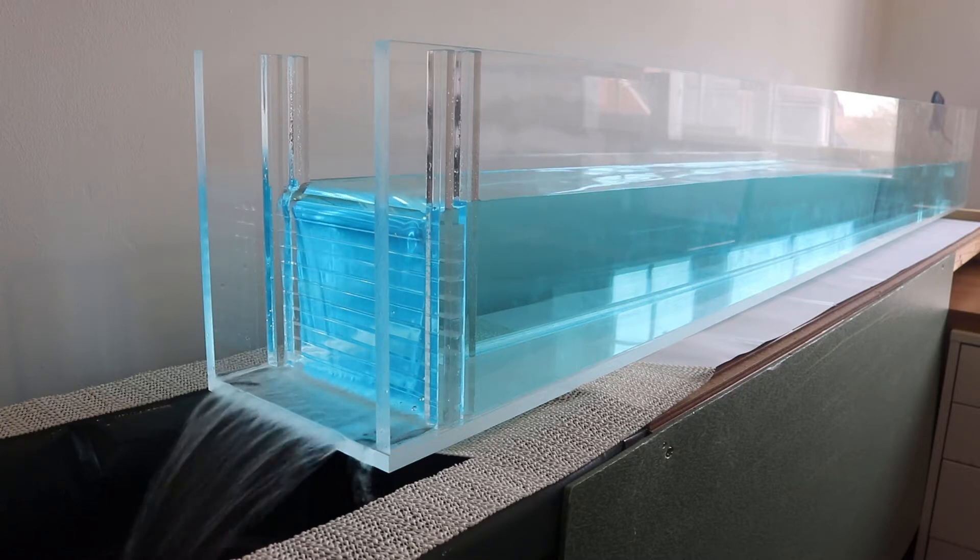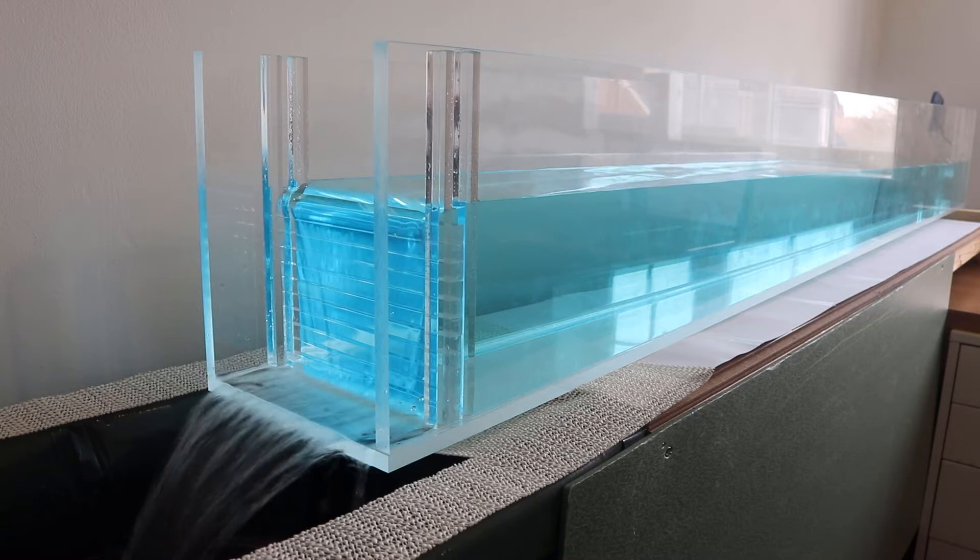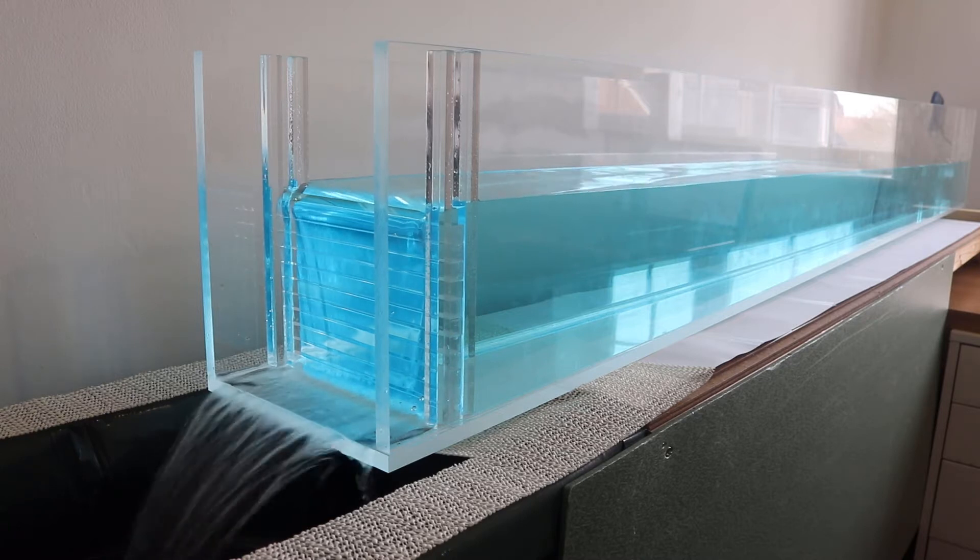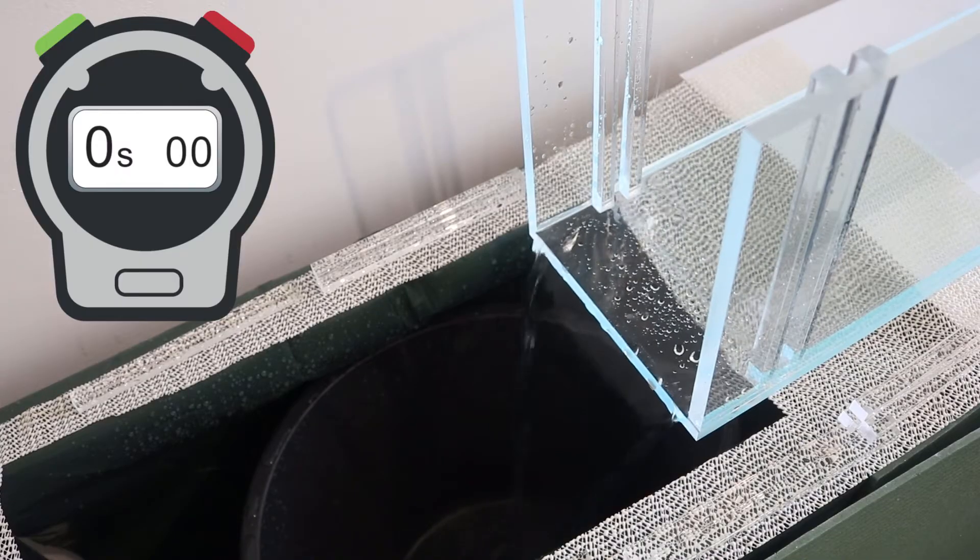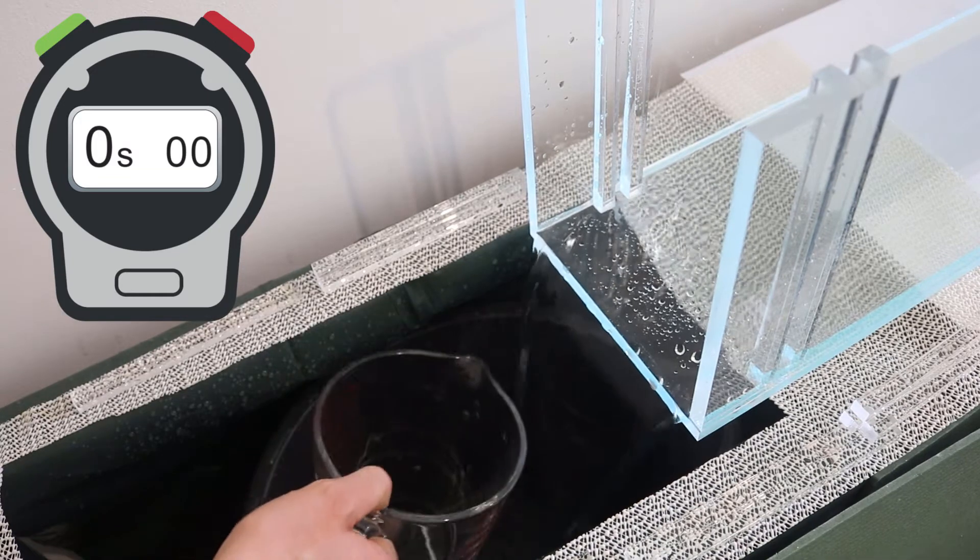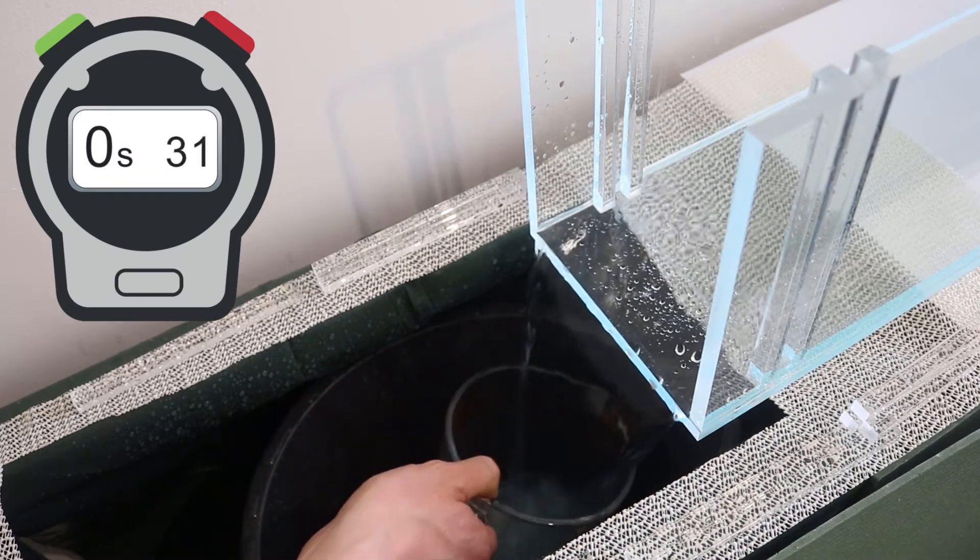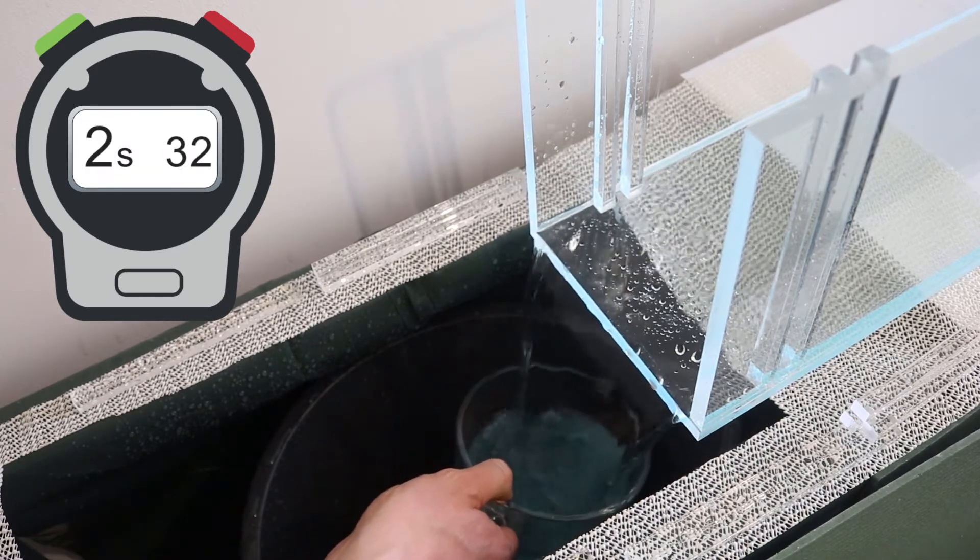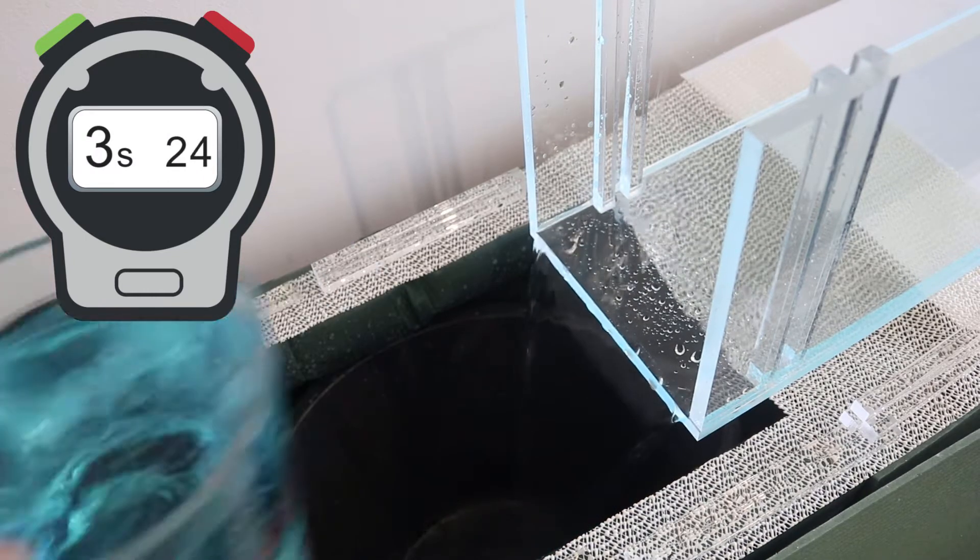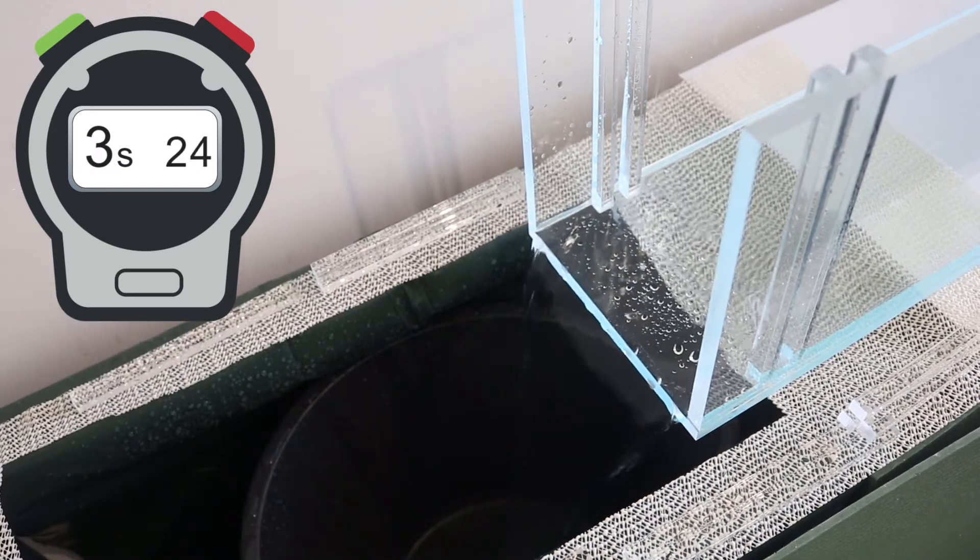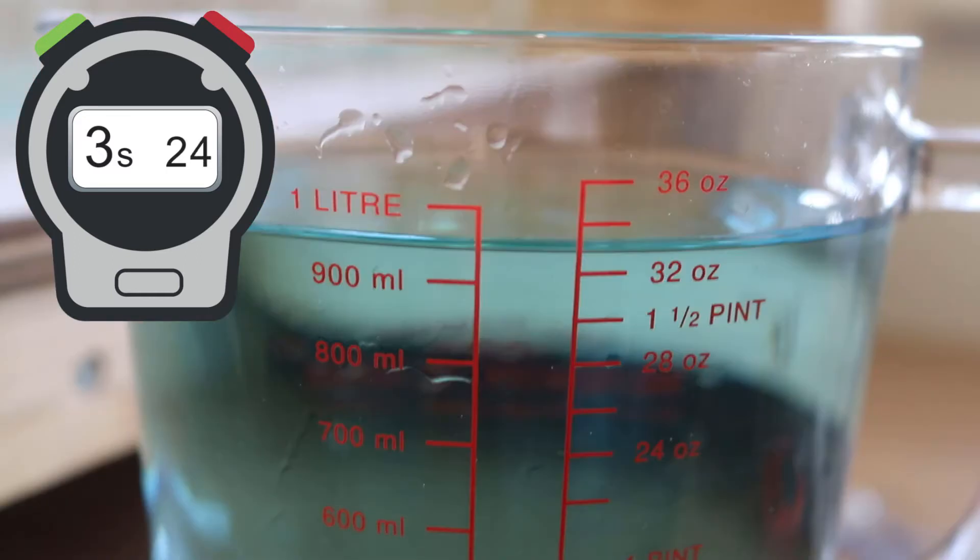So if we consider a flow in my flume, to measure the discharge all we need to do is time how long it takes to collect a certain volume and then divide that volume by the time. Here I'm collecting water in a jug and timing how long it takes to fill that volume with a stopwatch. In this example I've collected about 0.95 liters in just over three seconds. I'm going to round these numbers to make our life simpler.